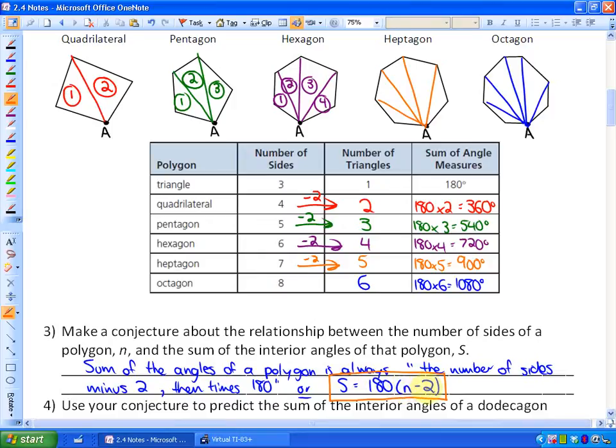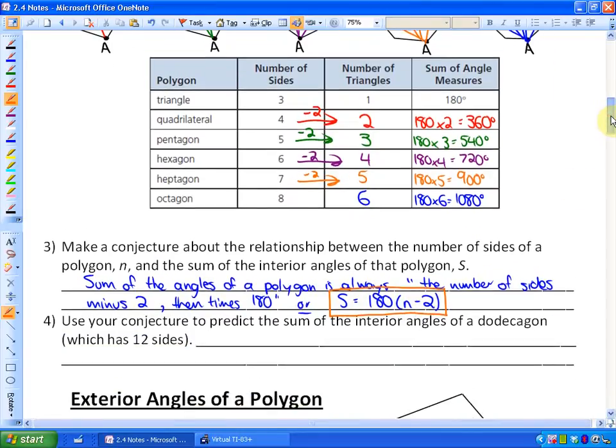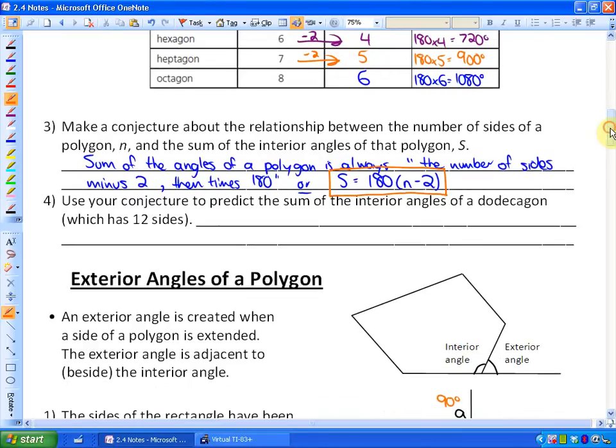So question four says, use your conjecture to predict the sum of the interior angles of a dodecagon, which has 12 sides. Well, the sum is going to be 180 times 12 minus two, or in other words, 180 times 10 triangles, which is 1,800 degrees. That would be the sum of the interior angles of a dodecagon.